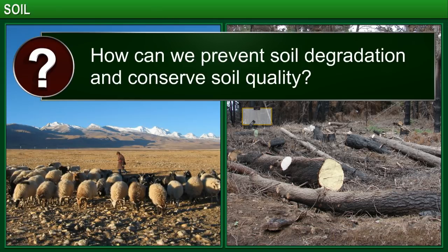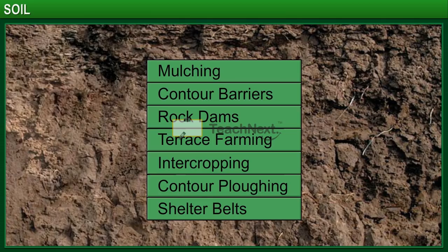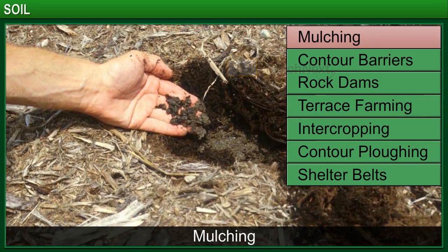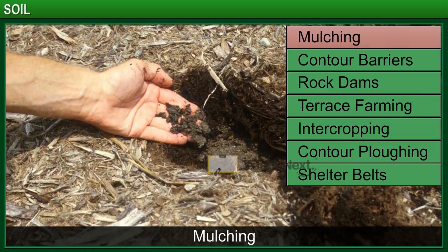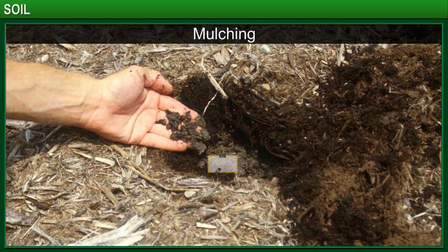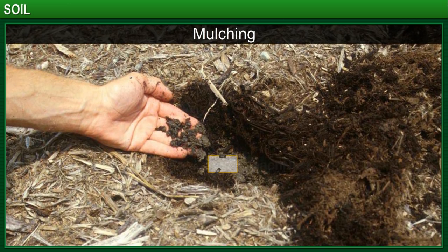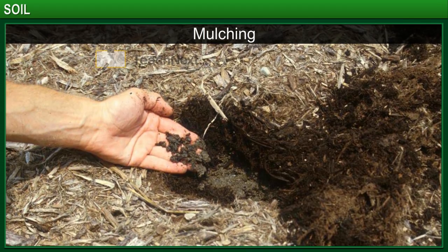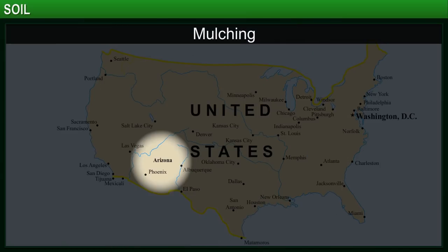To conserve soil quality, some methods include mulching, contour barriers, rock dams, terrace farming, intercropping, contour ploughing, and shelter belts. Mulching helps to trap moisture in the soil and moderate soil temperature. It involves covering the bare ground between plants with a layer of organic material like straw. Mulching is widely used in dry regions like Arizona, USA.